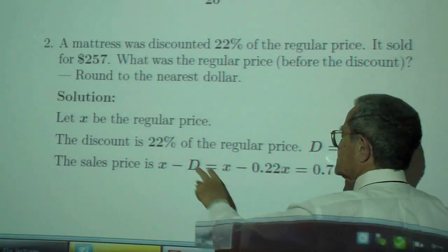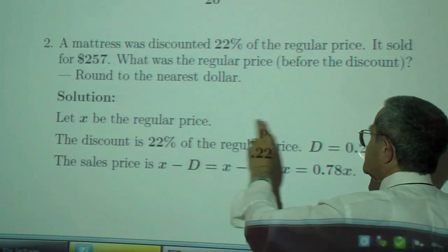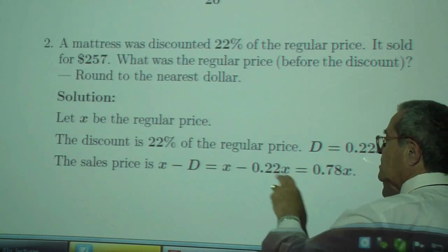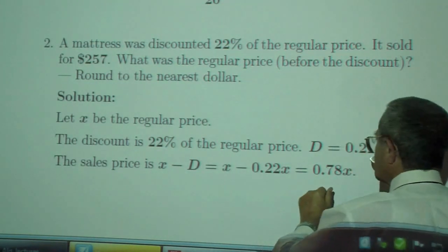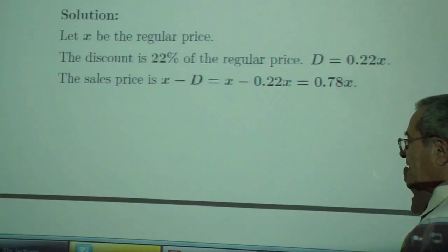The regular price is X. The discount is 22% off the regular price. The sales price is the regular price minus the discount, so 1 minus 0.22, or 0.78 of X.